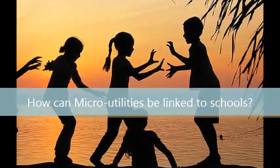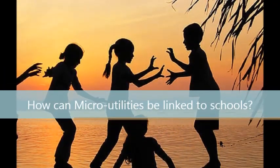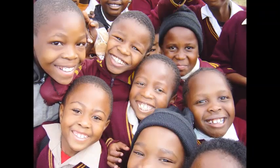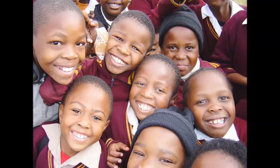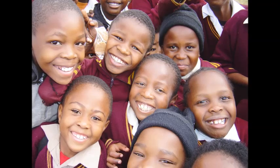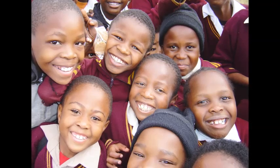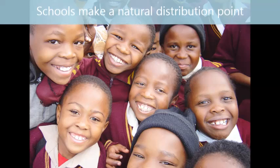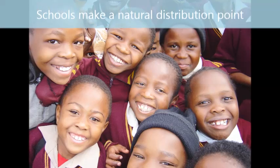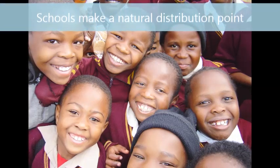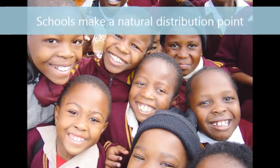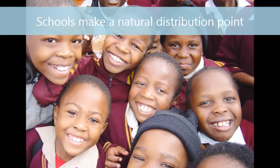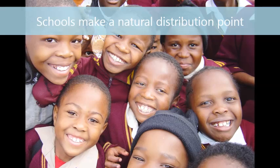Coupling micro-utilities to schools is not a new thing and has been done in India before. Schools make a natural distribution point for the batteries. Children are issued small battery packs, which they bring to school in the mornings and drop off with the micro-utility.